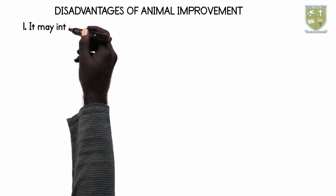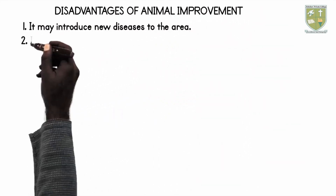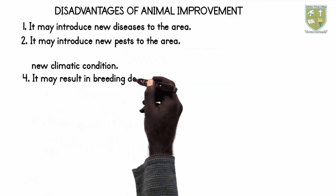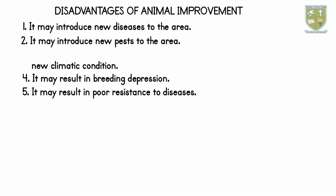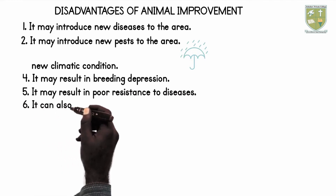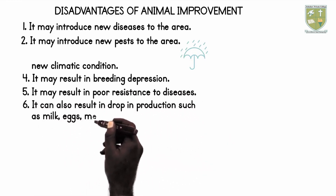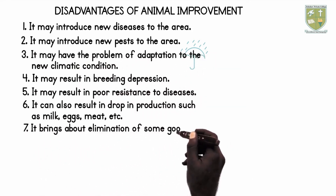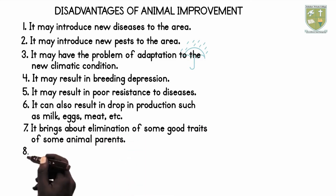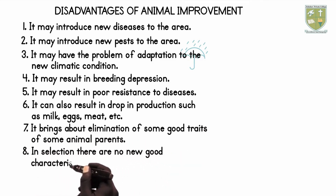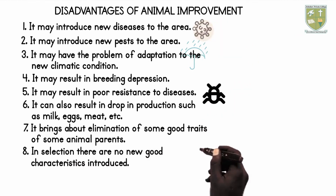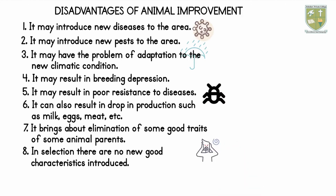Disadvantages of Animal Improvement. 1. This method may introduce new diseases to the area. 2. It may introduce new pests to the area. 3. It may have the problem of adaptation to the new climatic condition. 4. It may result in breeding depression. 5. It may also result in poor resistance to disease. 6. It can also result in a drop in production such as milk, eggs, meat, etc. 7. It brings about elimination of some good traits of some animal parents. 8. In selection, there are no new good characteristics introduced.